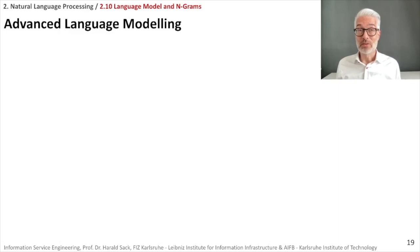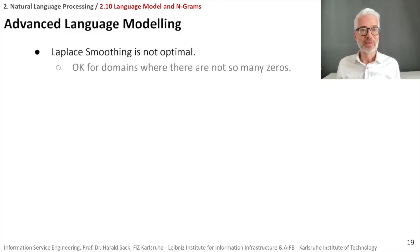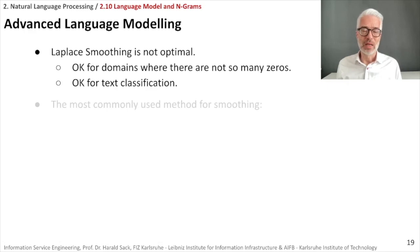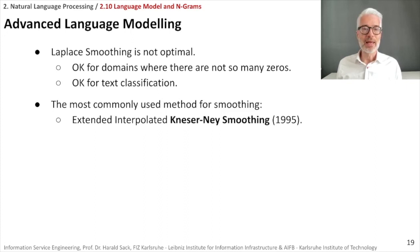Of course, this is a rather simple trick. And of course, it's also anything else but optimal. It's okay for domains where there are not so many zeros. So this doesn't occur rather frequently. Or if you only do text classification, then you don't really care for how often times this bigram occurs or not. Most commonly used for smoothing are more advanced methods.